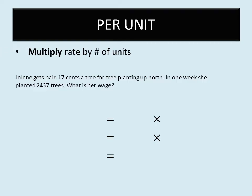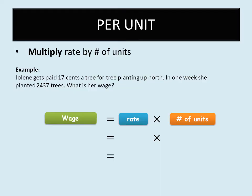We multiply the rate by the number of units. Wage, which is the same thing as salary, equals the rate multiplied by the number of units. The unit is the thing she's creating or producing. In this example, the rate — the amount of money — is 17 cents per tree. That's 17 cents for every tree she plants. The number of units is 2,437 trees. In other examples, a unit might be the number of sleeves you sew onto a blouse.